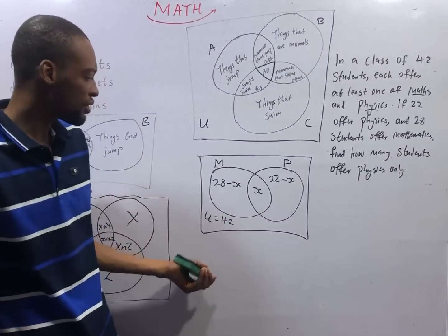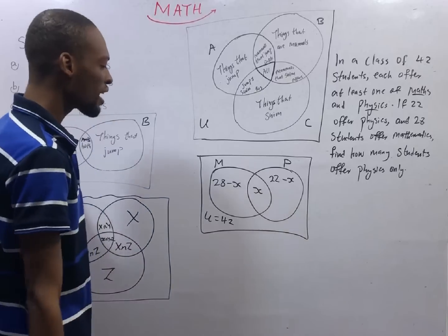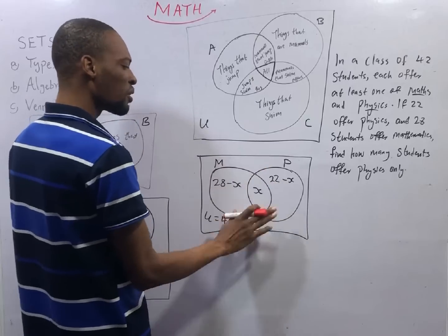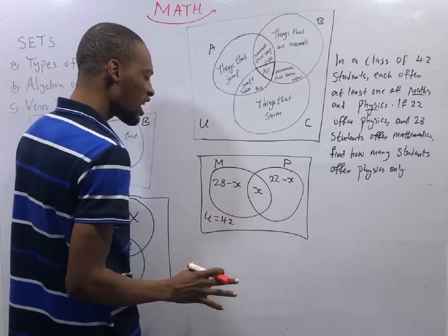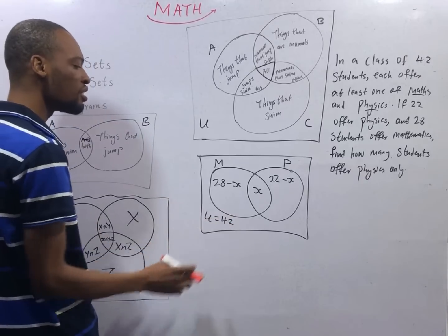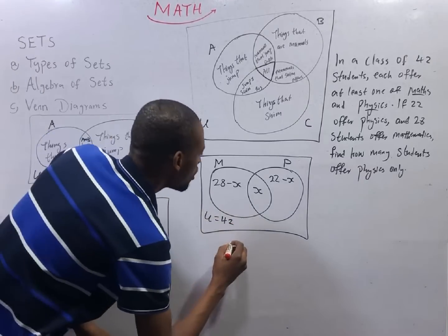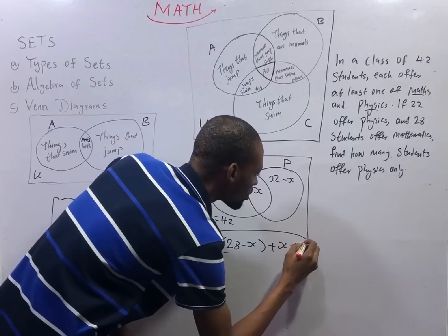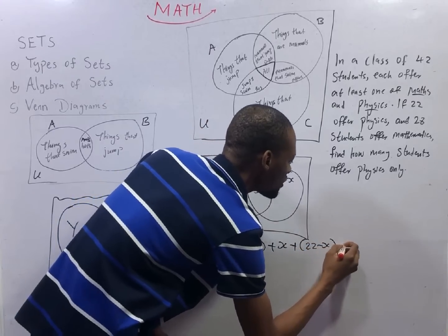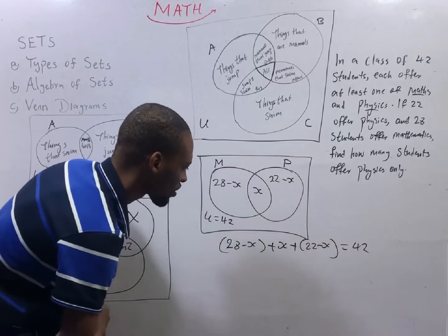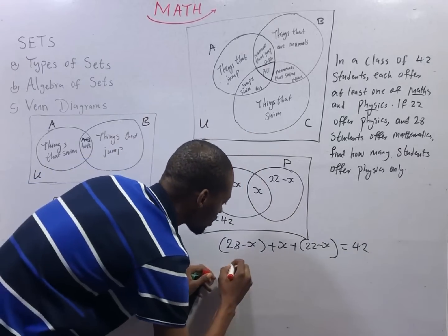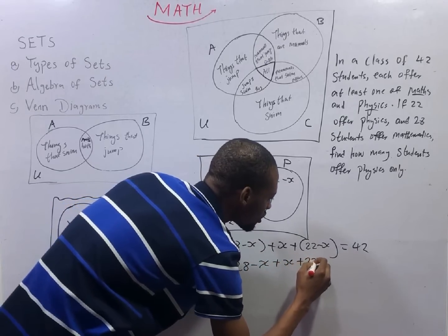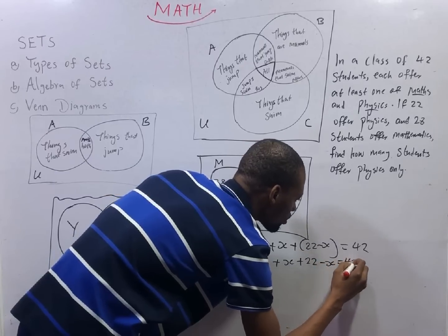We know that if we add those who offer only mathematics to those who offer both maths and physics, plus those who offer physics only, everything will give us 42. So this is 28 minus S plus S plus 22 minus S. Everything should give us 42. So this is 28 minus S plus 22 minus S equals 42.